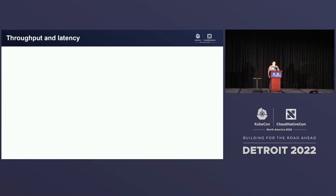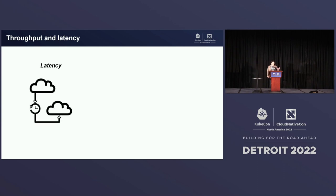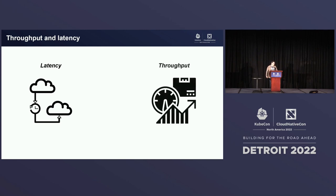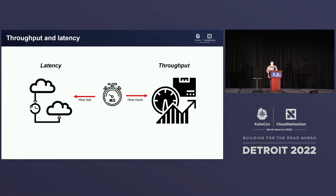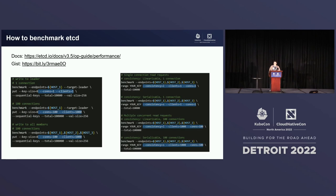We need to understand two concepts: throughput and latency. Latency is the time taken for an operation to be completed, and throughput is the number of operations completed in a period of time. In simple terms, latency is how fast an operation is completed, and throughput is how many operations are completed in that period of time.